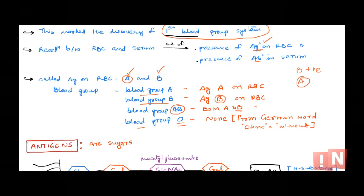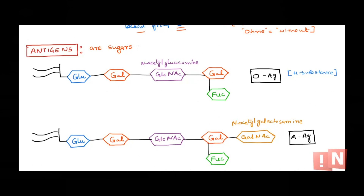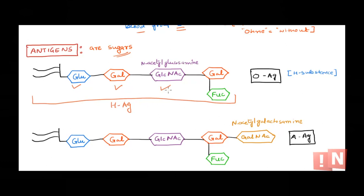Based on the antigen present on RBC, individuals are classified as A, B, AB, or O. Now what are these antigens and how do they look? These antigens A, B, or O are nothing but sugars present on the cell membrane of RBC. On the RBC cell membrane there is a sugar moiety, and the base unit is called H substance or H antigen - that is glucose, galactose, and N-acetylglucosamine, again galactose with fucose.